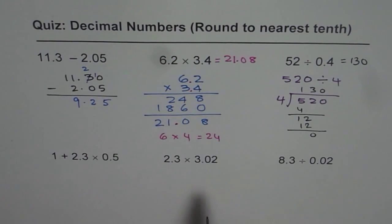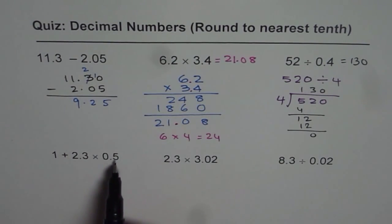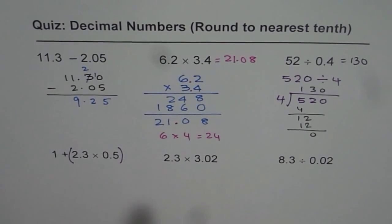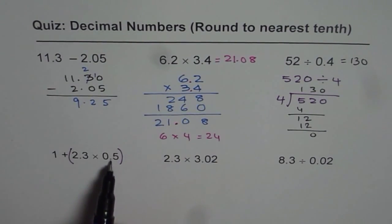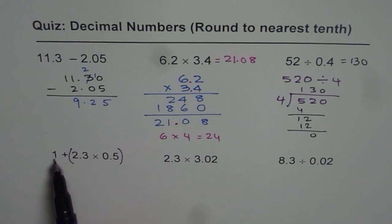Now these questions here are kind of tricky. 1 plus 2.3 times 0.5. Remember the rules. We need to first multiply, and then add. So don't do the mistake. First multiply. And to multiply, follow this technique. And then you add 1.